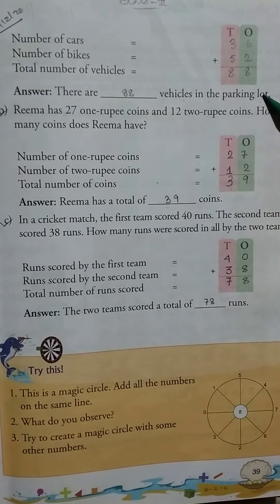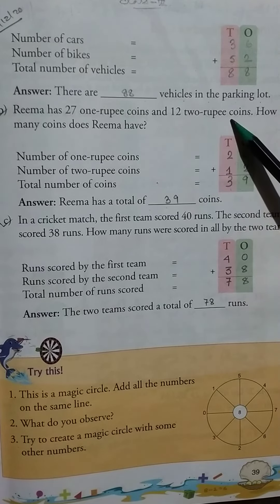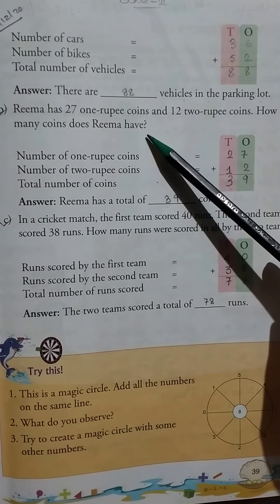Number B: Rima has 27 one-rupee coins and 12 two-rupee coins. How many coins does Rima have?